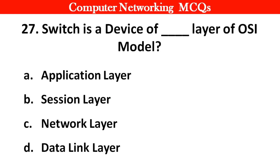Question 27: A switch is a device of which layer of the OSI model? Right answer is option D: Data link layer.